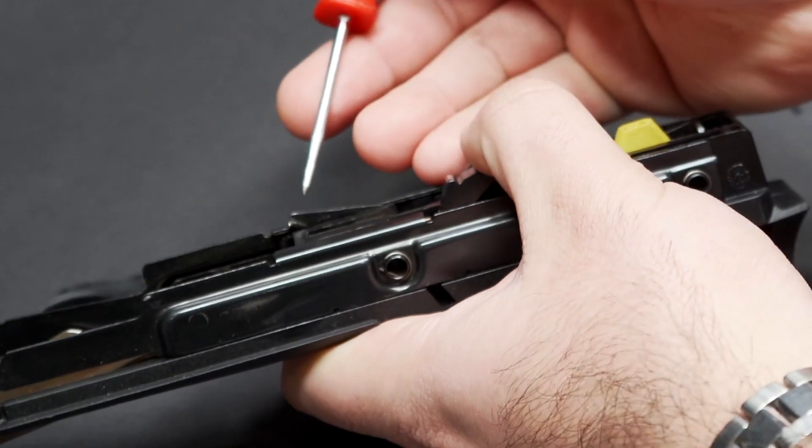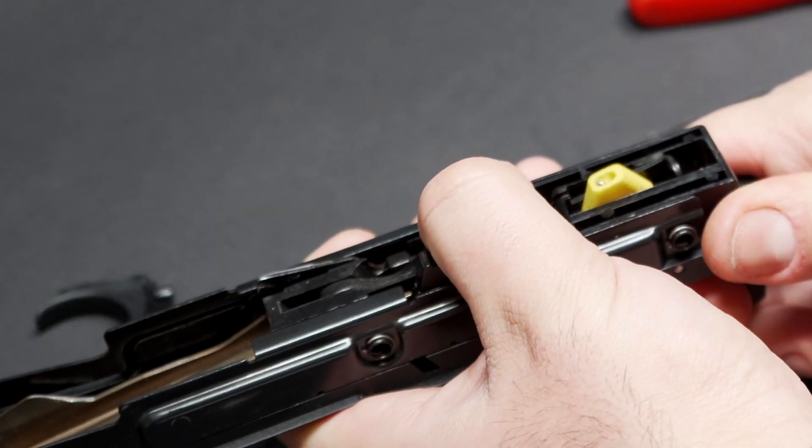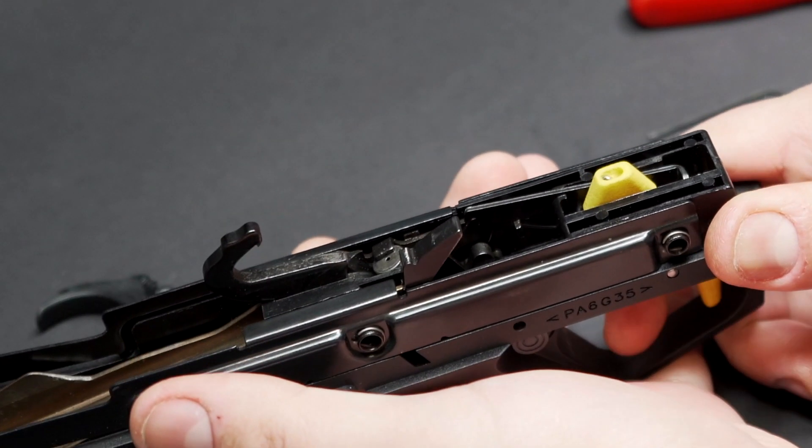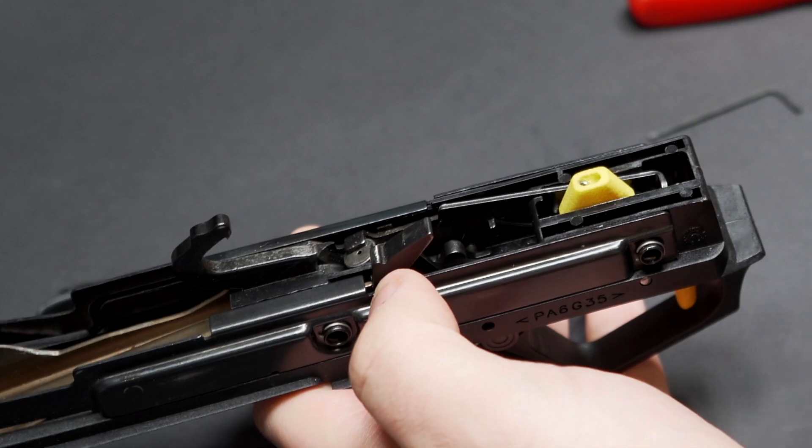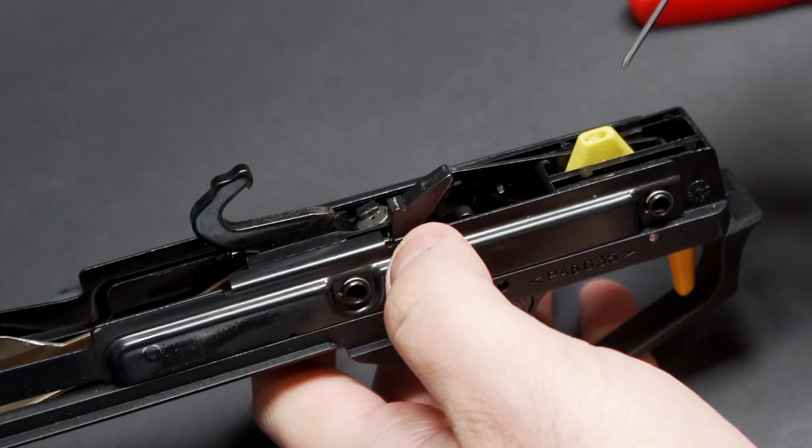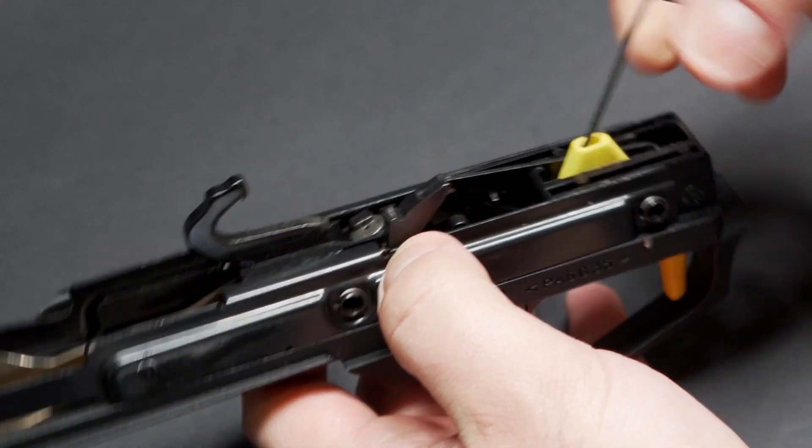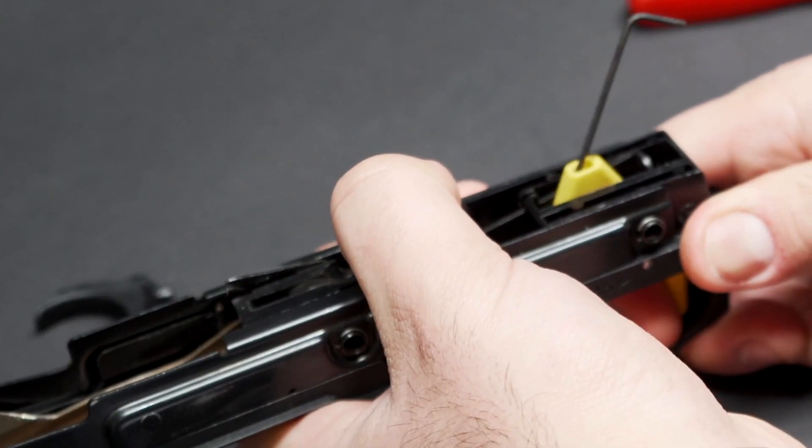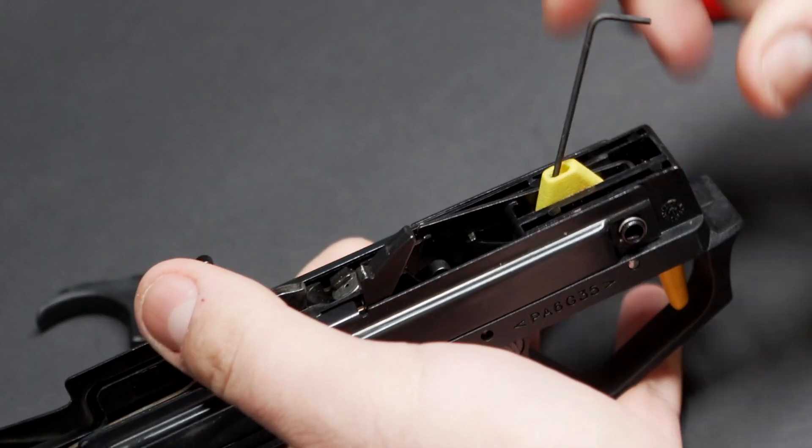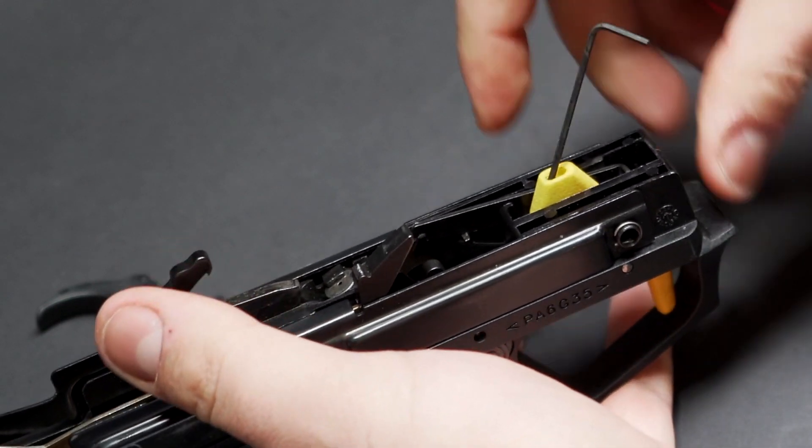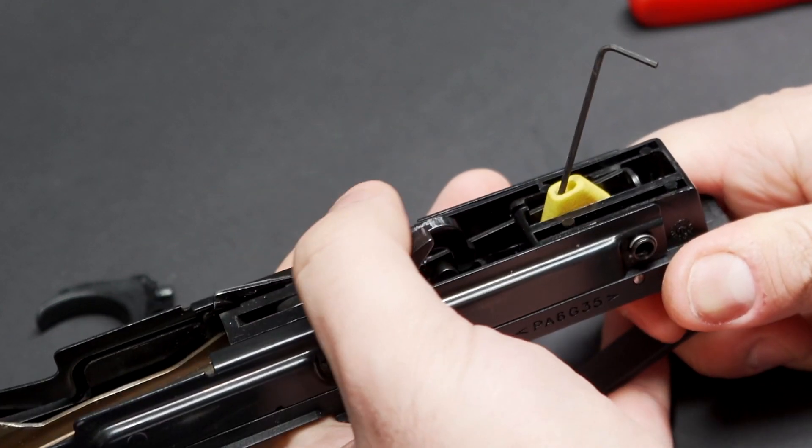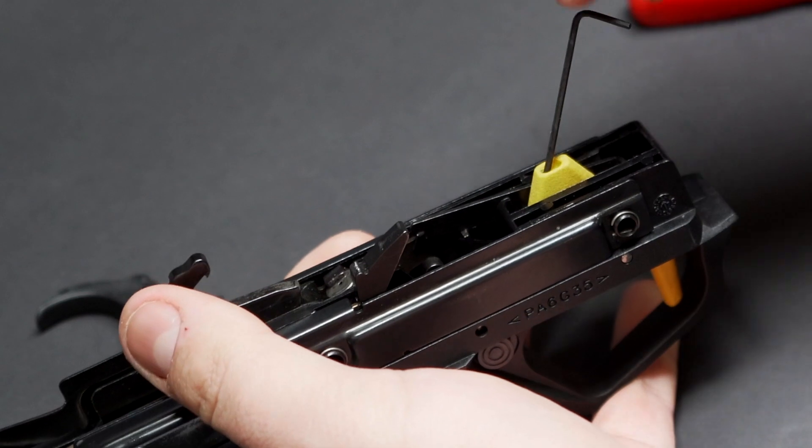Now all the adjustment for this is in the over travel stop. So all you want to do is just make very, very small adjustments until it will pop up of its own accord with the trigger fully depressed. Almost there. There we go.